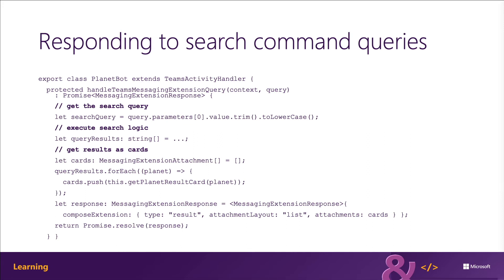The type property can be one of a couple different options. It can be set to result, which is going to display a list of the search results. It can be set to message, which displays a plain text message.